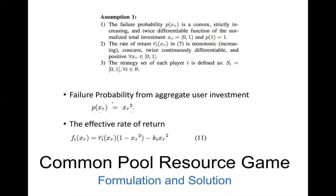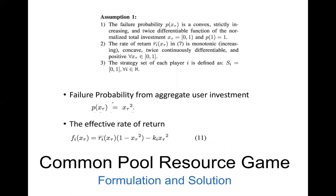The paper has several assumptions. The failure probability p(x_tau) is convex — as aggregate investment x_tau increases, the probability of failure increases. The rate of return is monotonic, differentiable, and positive, and must be within 0 and 1. The strategy set of each player is defined as [0, 1]. The failure probability is modeled as x_tau squared. The effective rate of return is gain term minus loss term, representing user gain and loss respectively.